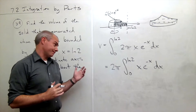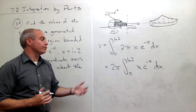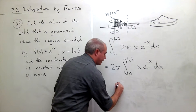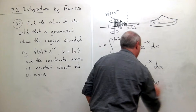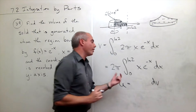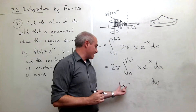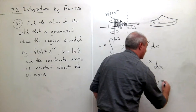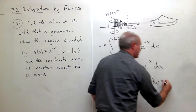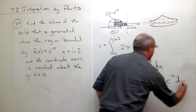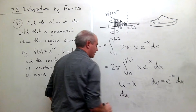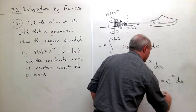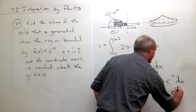Now I'm ready to set up my u value and my dv value to integrate by parts. For u I want something that simplifies when I differentiate, so I'll set u = x, and for dv I'll set dv = e^(-x) dx. Then du = dx and v = -e^(-x).